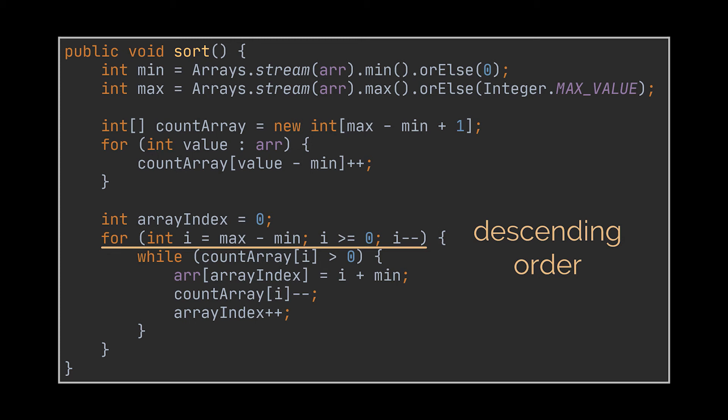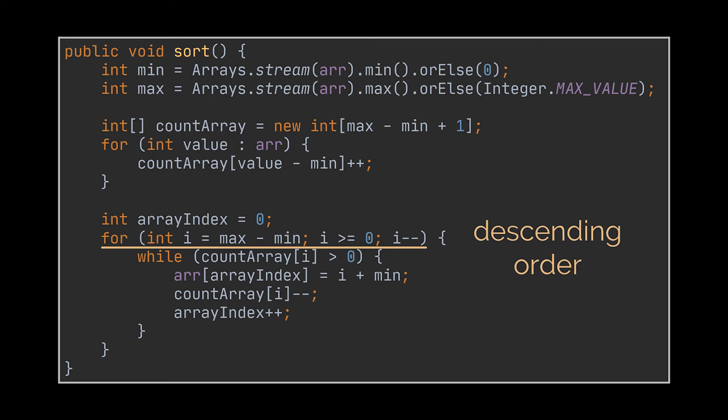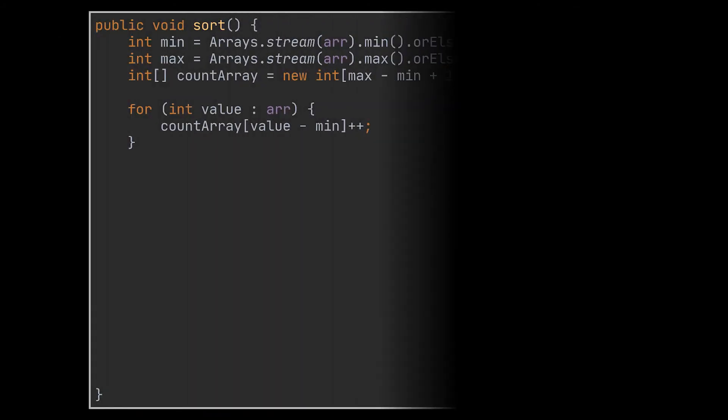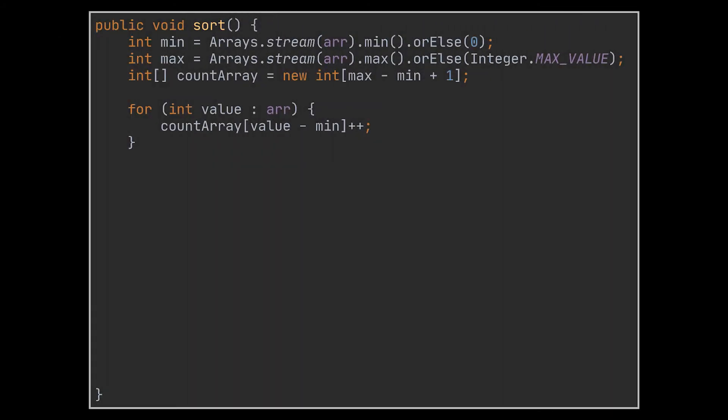Now in the second part of this video I want to show you another way to implement the counting sort algorithm, because you may stumble upon either of these implementations and I want you to understand what is happening in both cases. The very first part of this implementation is exactly the same — we iterate over the initial array and count the occurrences of each value, storing them in a newly created array that can hold max minus min plus one elements.